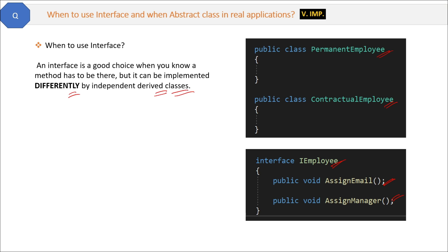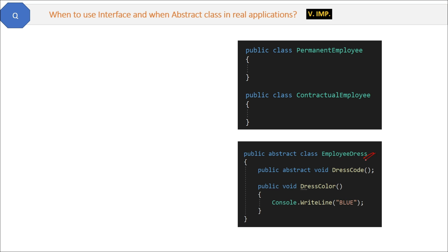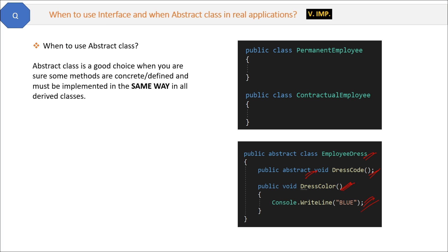When to use abstract classes: for example, with PermanentEmployee and ContractualEmployee, we have an abstract class where 'DressCode' is an abstract method because the implementation differs depending on whether the employee is male or female. But the 'EmployeeDressColor' method always returns blue in any case, so we know the implementation and define the method body there.